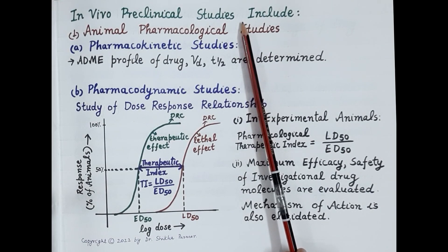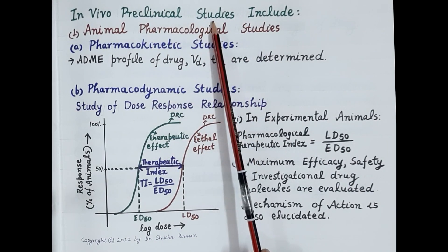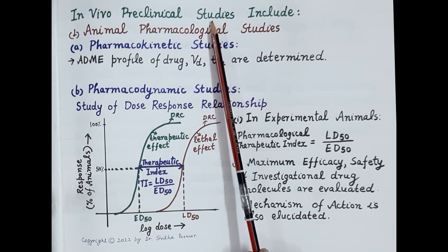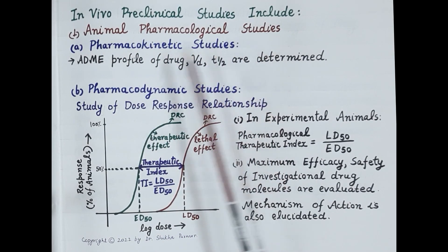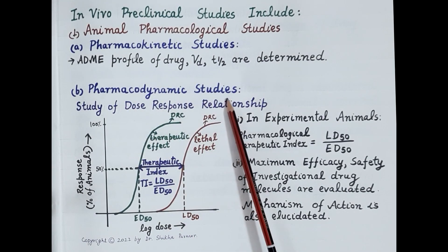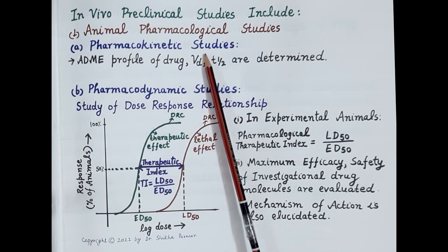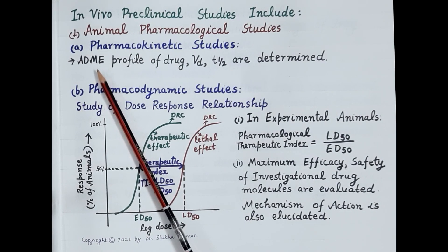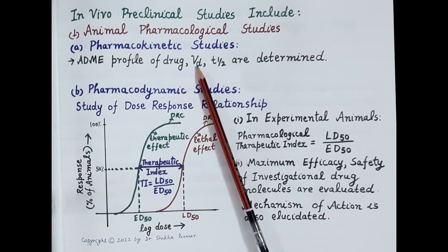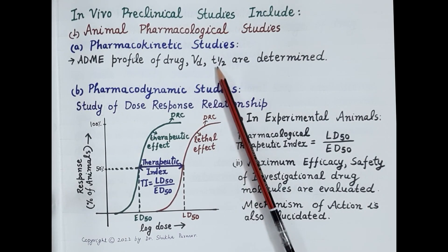Two types of studies are performed during preclinical evaluation: animal pharmacological studies and animal toxicological studies. Animal pharmacological studies include pharmacokinetic and pharmacodynamic studies. Pharmacokinetic studies evaluate ADME — absorption, distribution, metabolism, and excretion — of potential drug candidates in animals. Volume of distribution (Vd) and half-life (t½) of drug candidates are also determined.